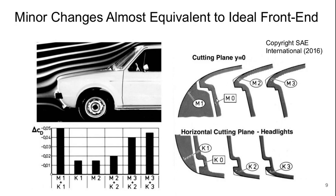M0 was the default vehicle design, M1 is the ideally rounded, and the same thing with the Ks. Then a small addition of this corner radius in M2, and a bit bigger in M3, similar for the Ks.